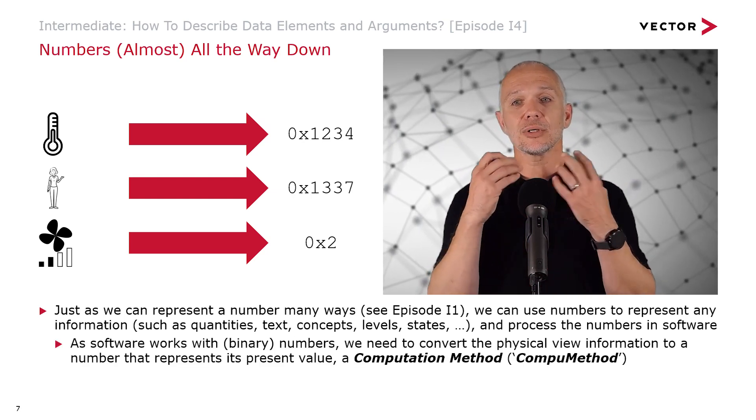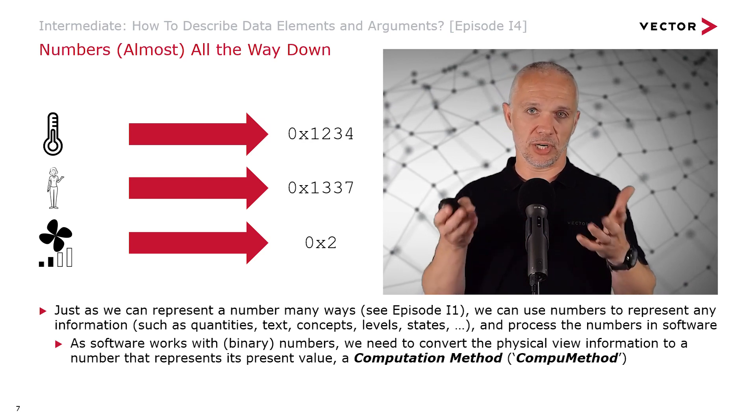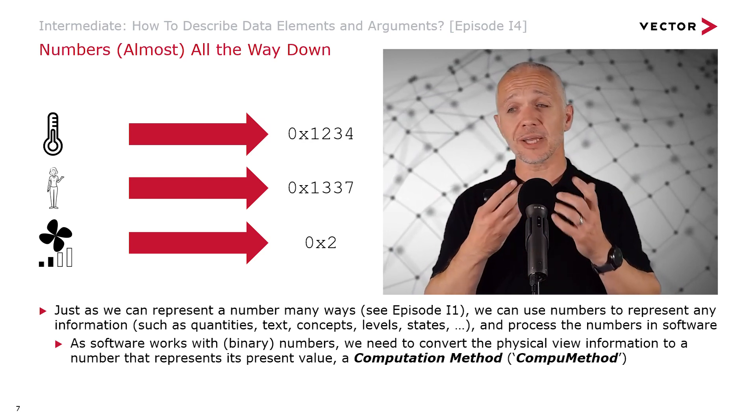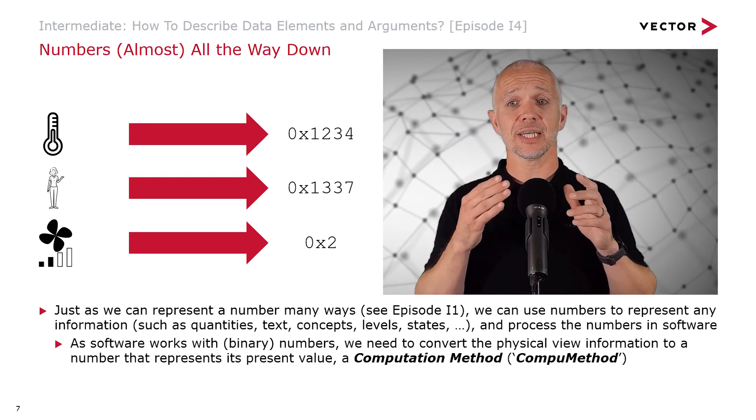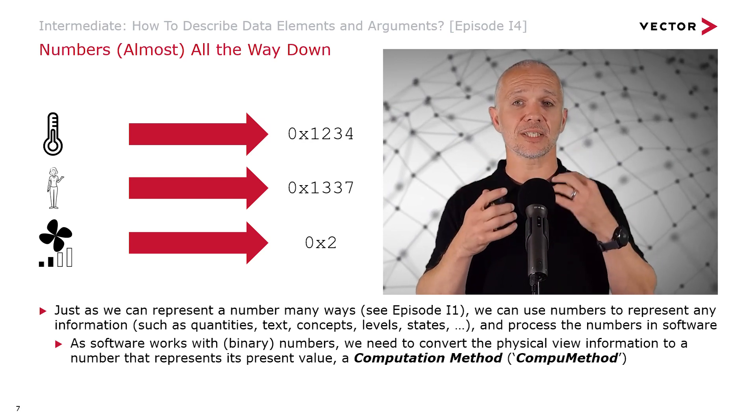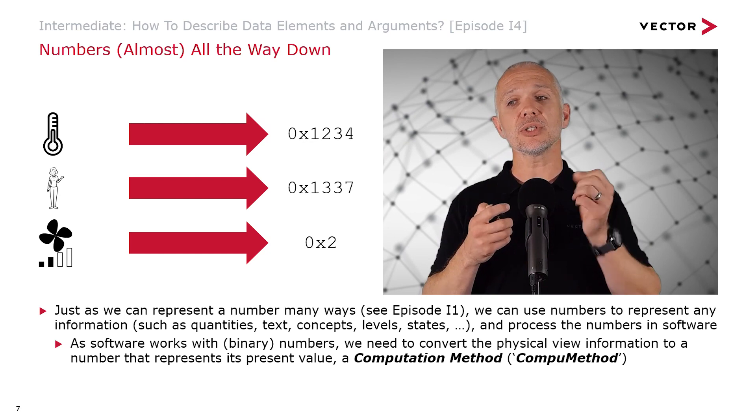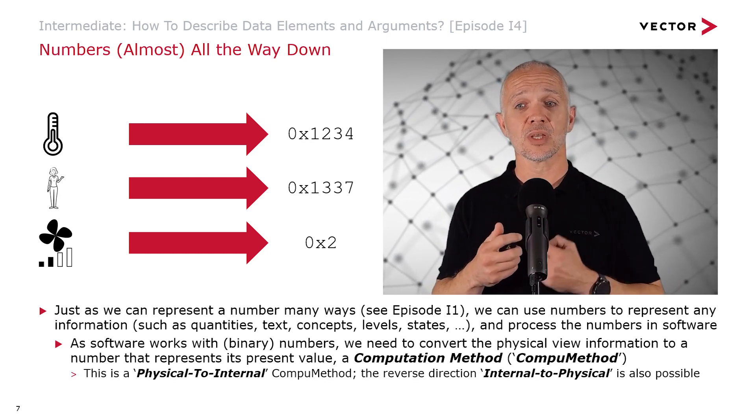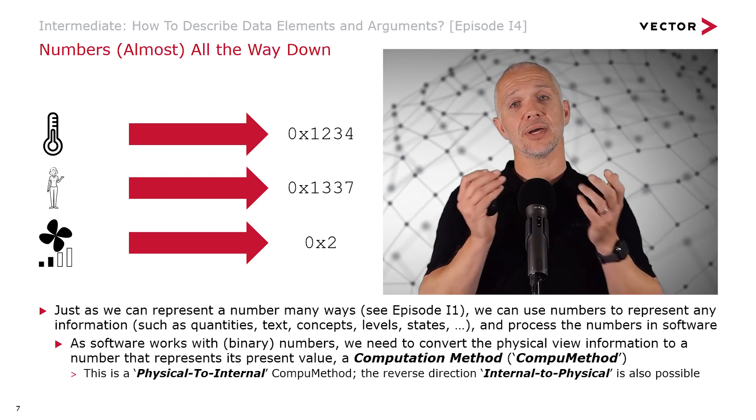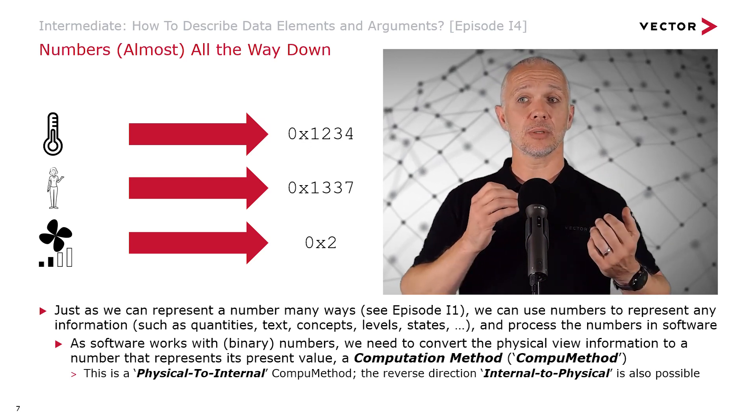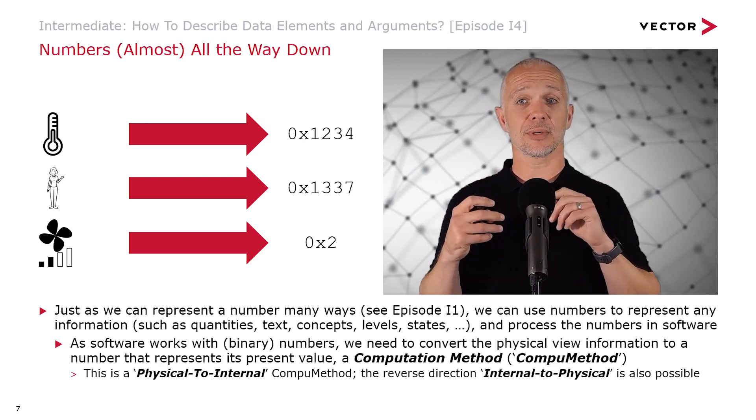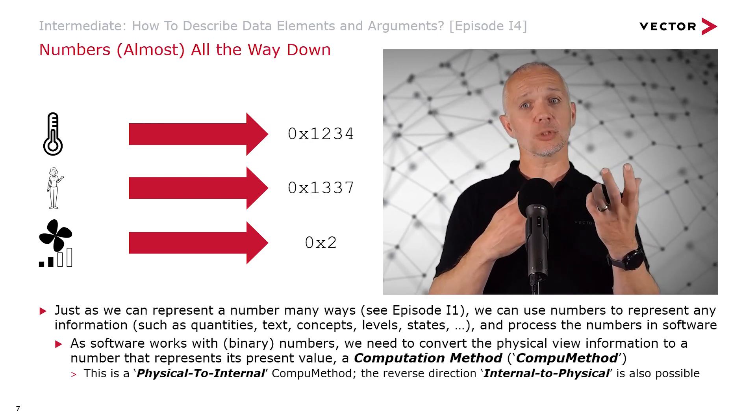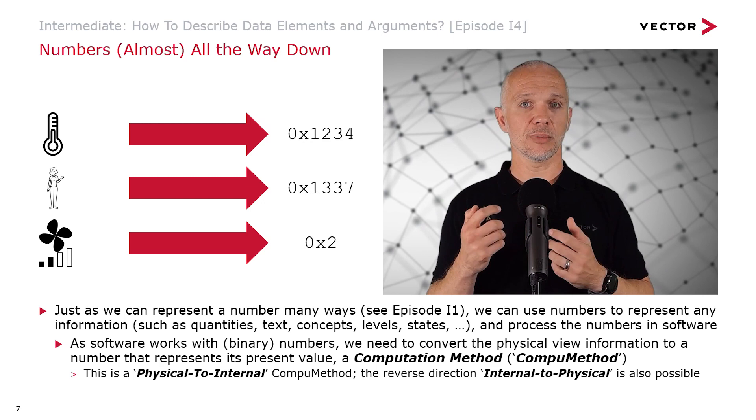As software works with numbers, binary numbers in fact, we need to convert the physical view information that we have into a number that represents its present value. And we use a computation method or CompuMethod for short to do this. The examples we're showing here of a temperature becoming a number, a user setting becoming a number, or a fan speed corresponding to a number—this is physical to internal CompuMethods.